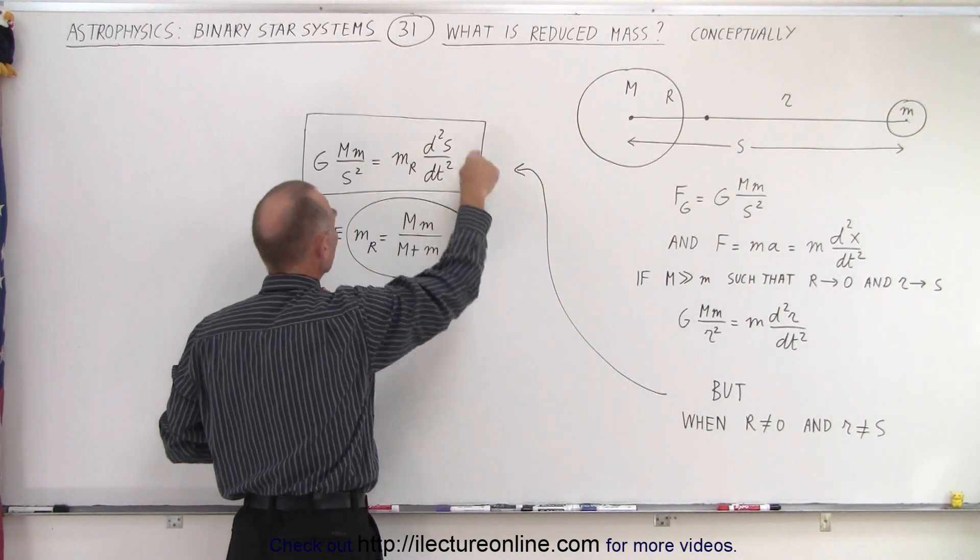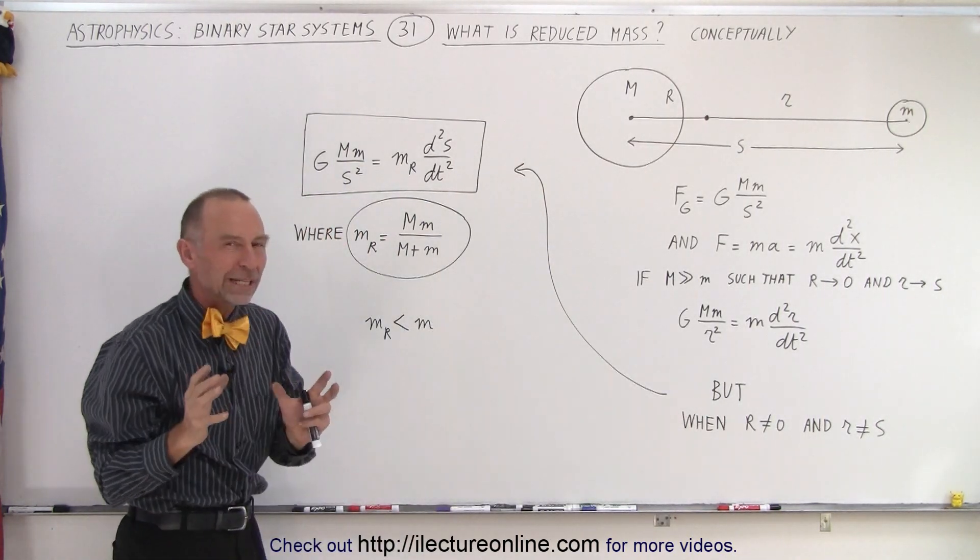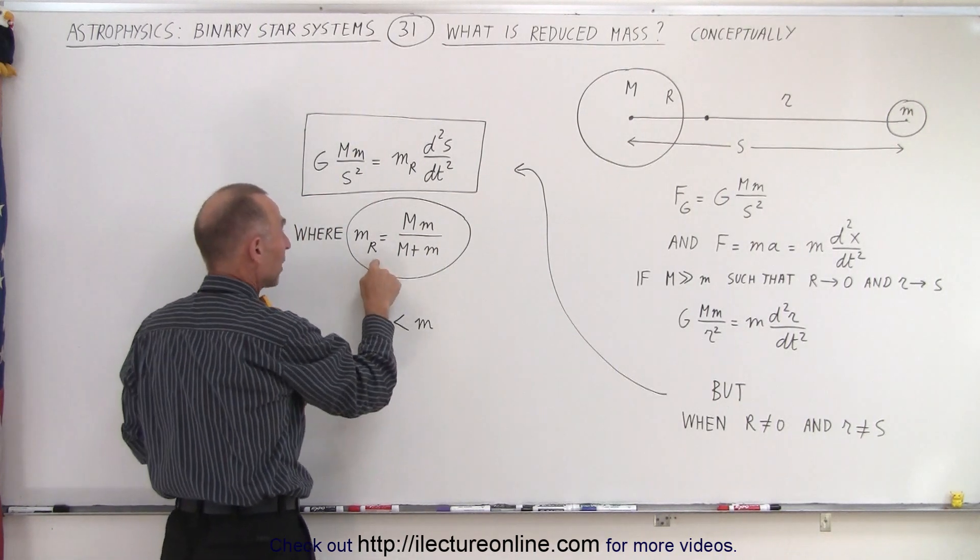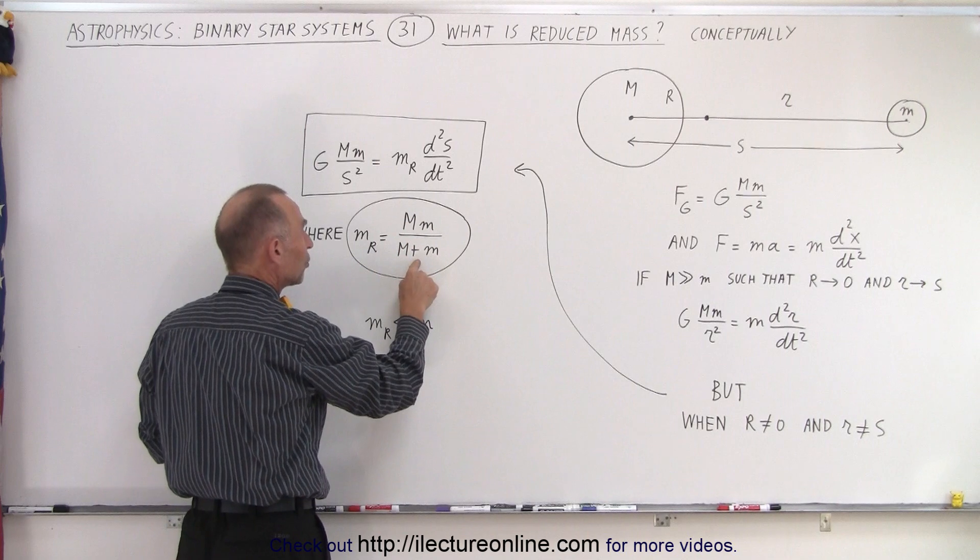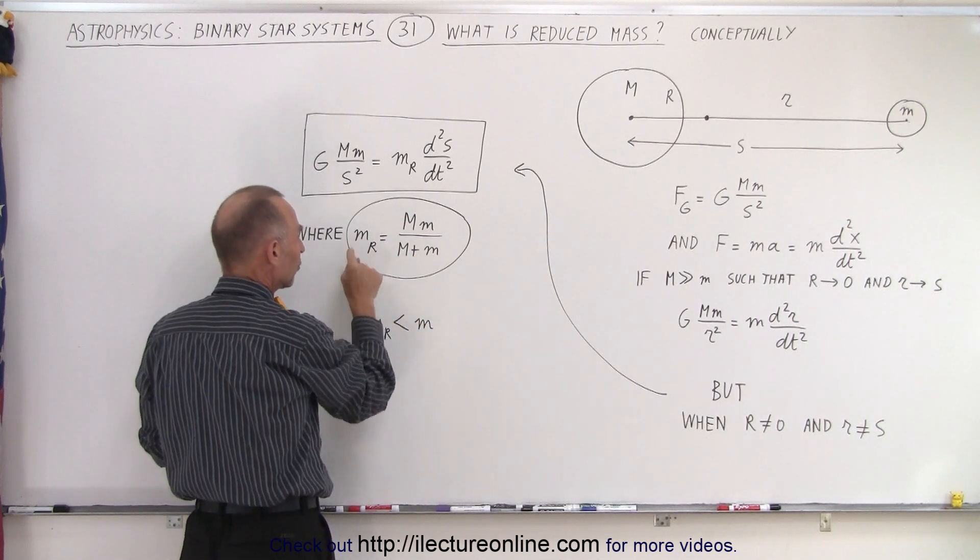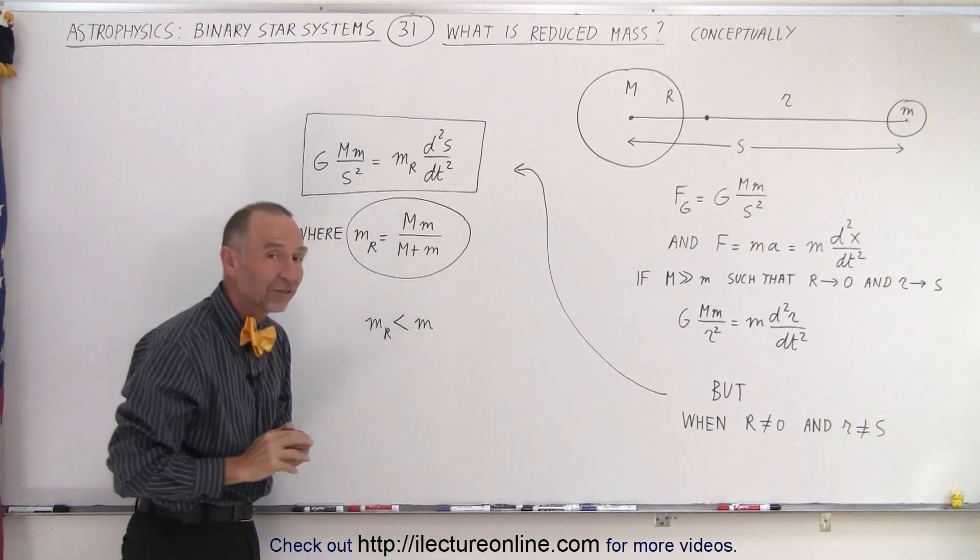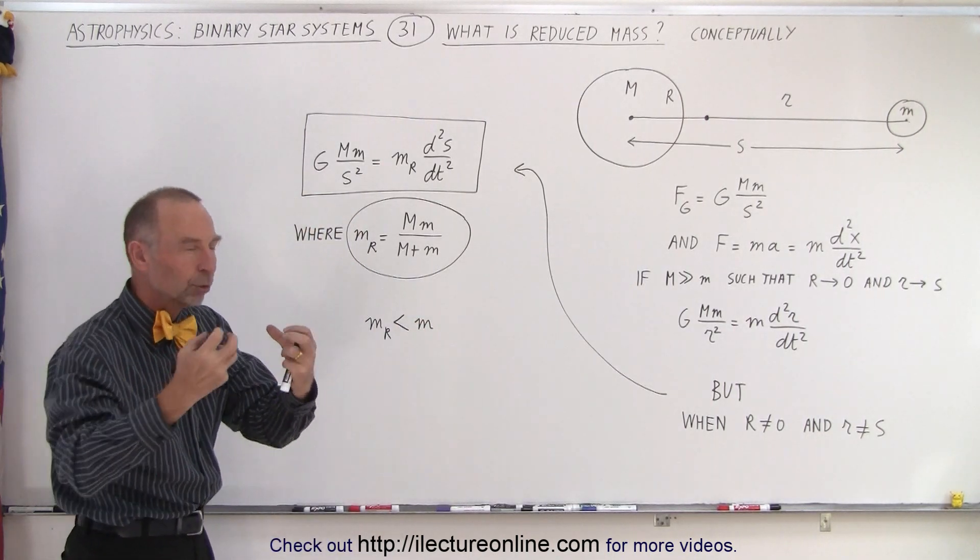If we use the mass of the actual planet, then this equation will not be correct. And that's why we need the reduced mass. Now why is it a reduced mass? The reduced mass is the product over the sum of the two, which means the reduced mass will always be smaller than the smaller of the two masses. And that's why they call it the reduced mass.